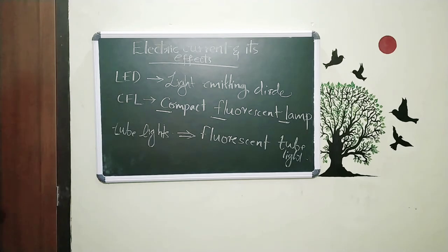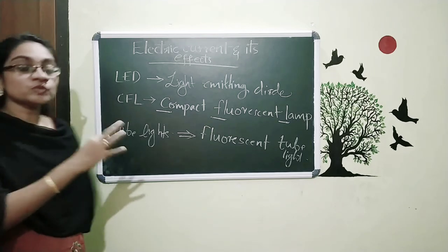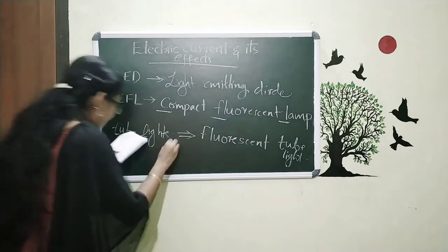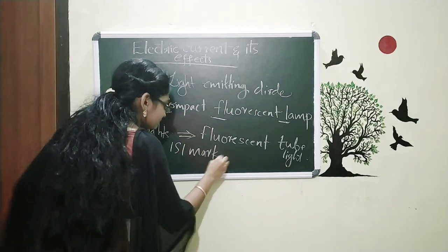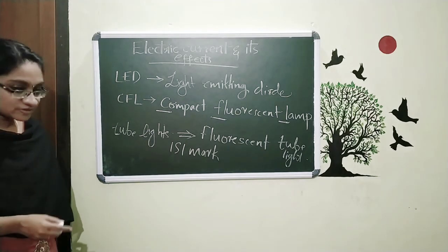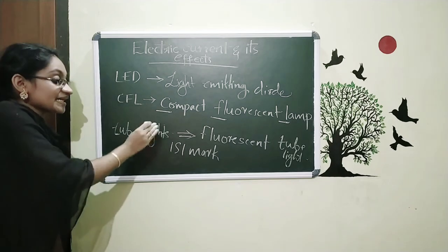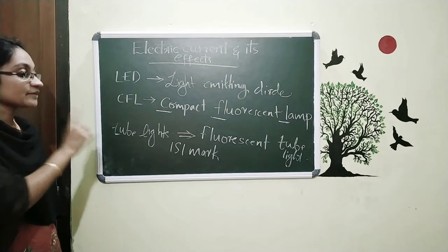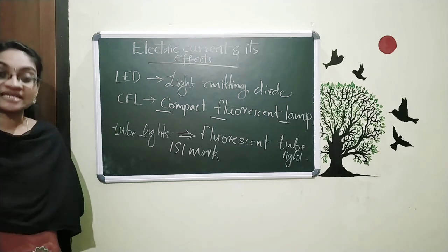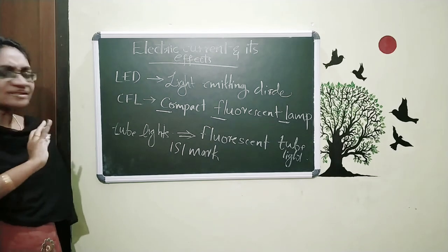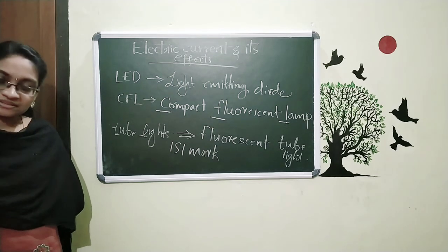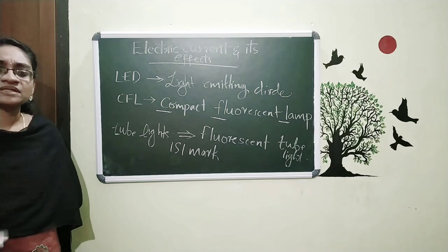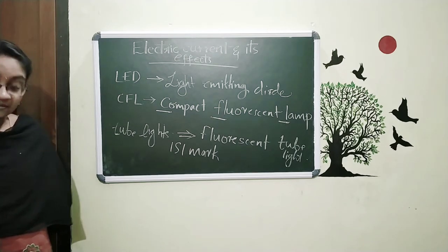We are using CFL and LED to save energy. When observing these bulbs, you can see an ISI mark on them. The ISI mark means they have been checked and certified as safe for use, and they are confirmed to lose energy only in a very small quantity. All devices have some energy loss, but the filament lamp loses too much, which is why we don't use it.